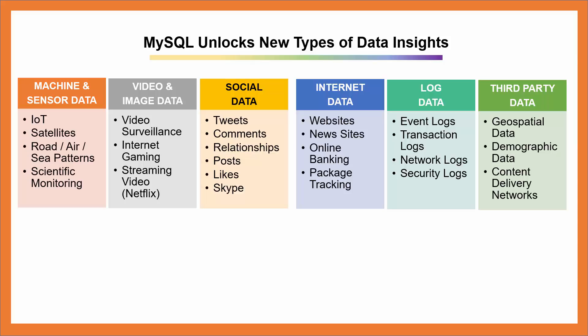The next column gives you examples of video and image data, such as video surveillance, internet gaming, and streaming video sites such as Netflix. The next column shows examples of social data, such as tweets, comments, relationships, posts, likes, and sites like Skype.